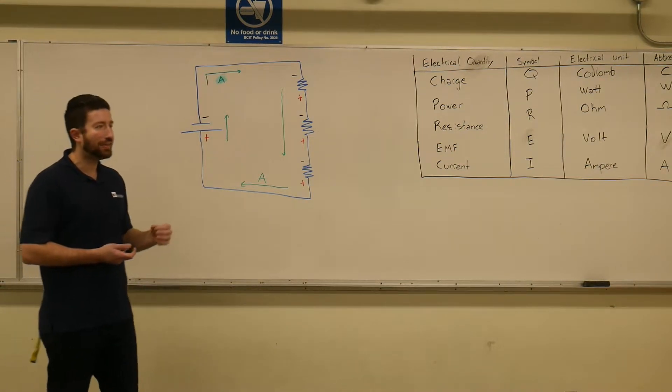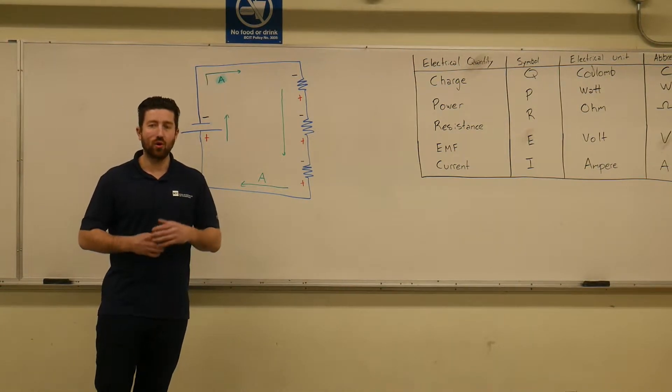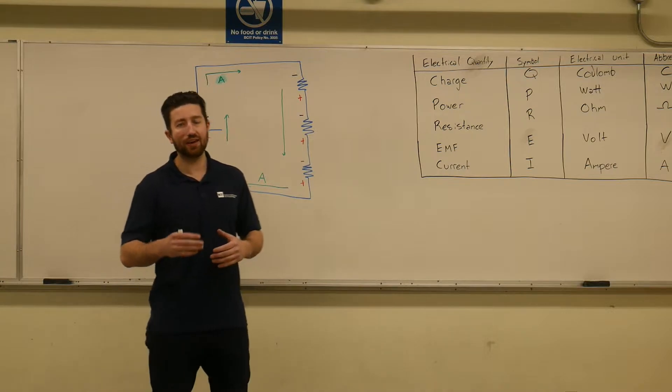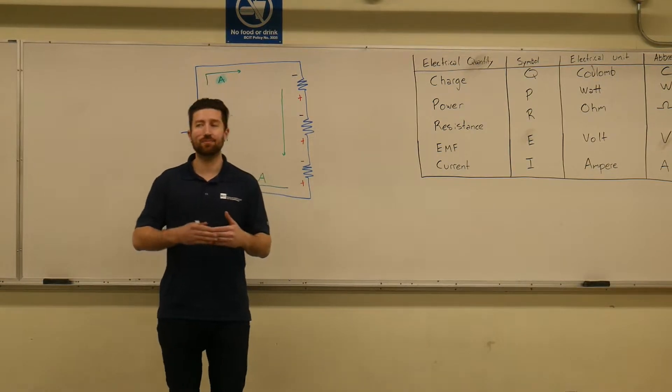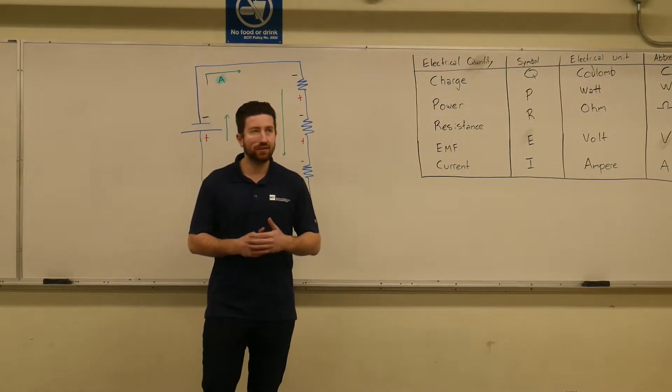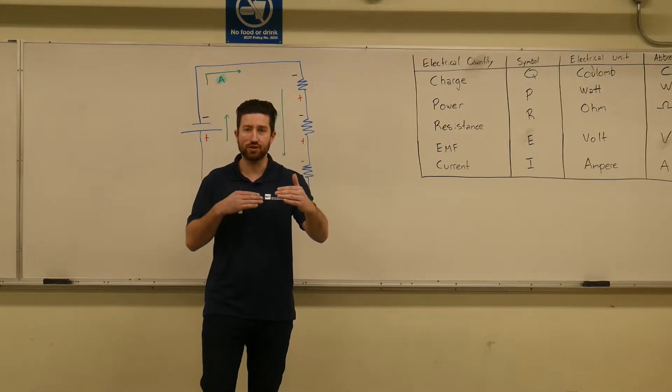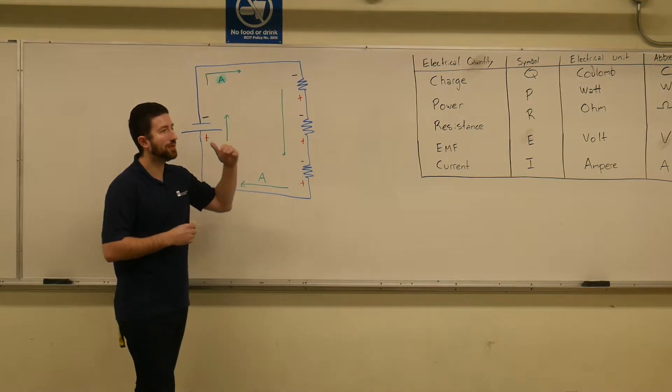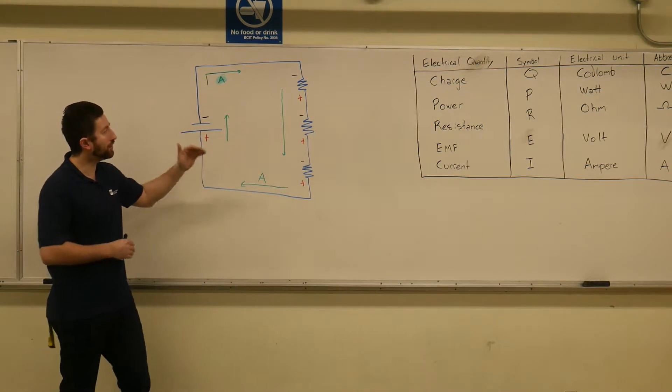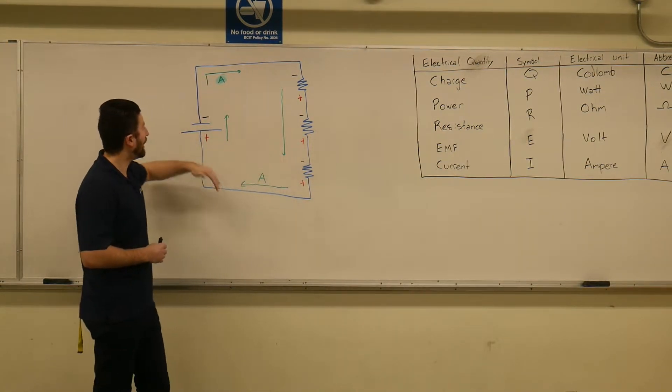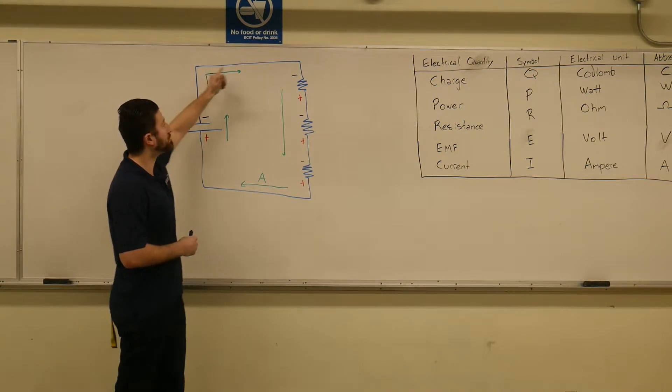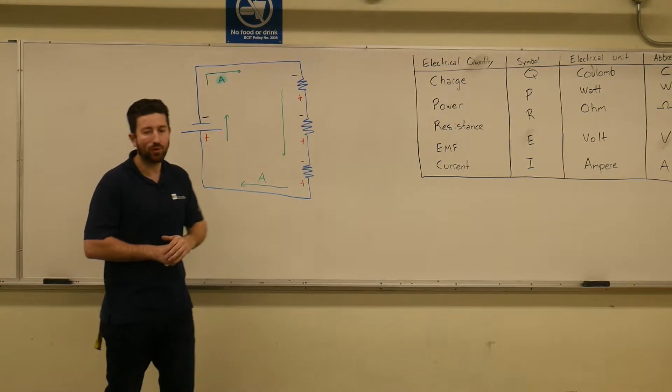Now, when you're looking at electron flow, the only way electrons can flow is if there is a complete path, and there has to be a difference in the charges. Meaning that one point has to be more negative than the other point for electrons to travel. Meaning that this point here is more negative than this point, so electrons travel around.